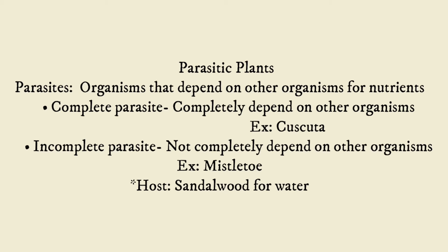Parasitic plants: parasites are organisms that depend on other organisms for nutrients. There are two types — complete parasites, which depend completely on other organisms, for example Cuscuta; and incomplete parasites, which do not completely depend on other organisms, for example mistletoe, which hosts on sandalwood and depends on it only for water.